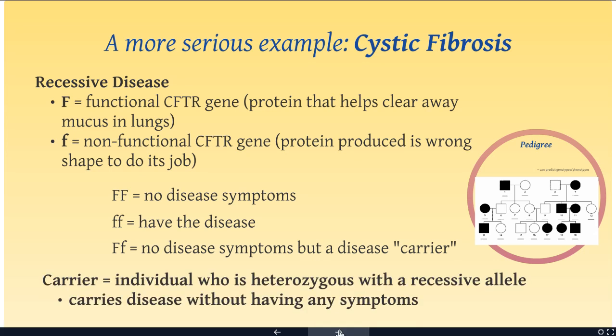Someone who is a carrier is someone who is heterozygous for a disease with a recessive allele — they're carrying the disease without having any symptoms. I want to go back to that same set of Punnett squares you just did and look at them thinking about cystic fibrosis rather than freckles.